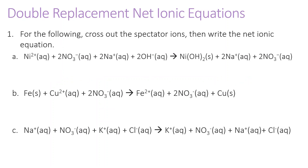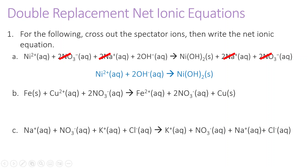For question A, we can eliminate the nitrate and the sodium. What we're left with is our net ionic equation: nickel plus two aqueous reacts with two hydroxide aqueous to form nickel hydroxide solid. Notice that the net ionic equation is still balanced.